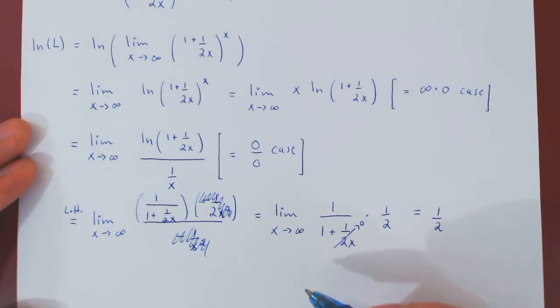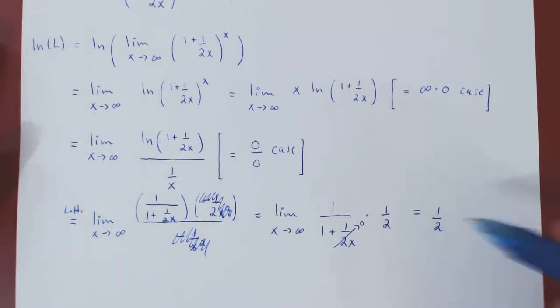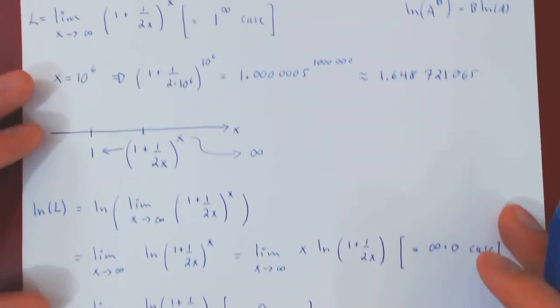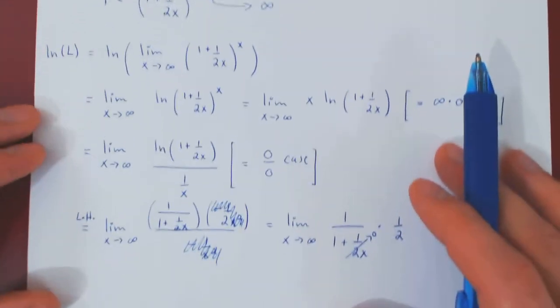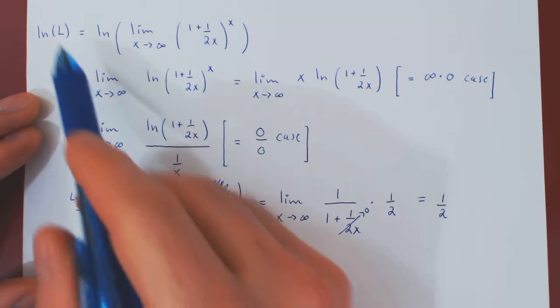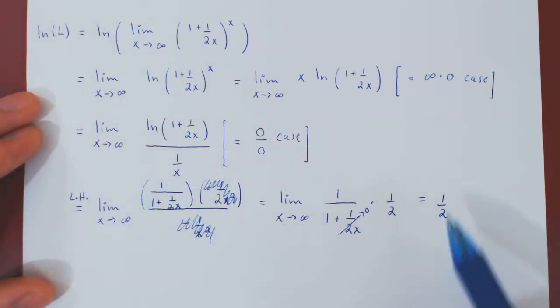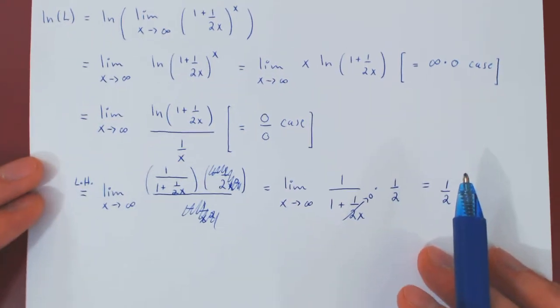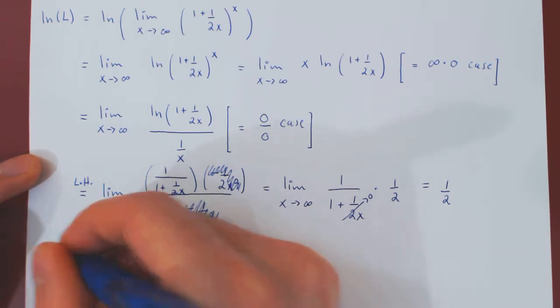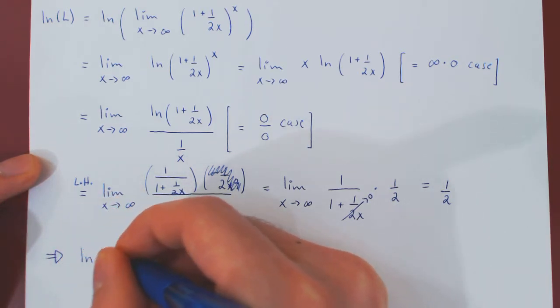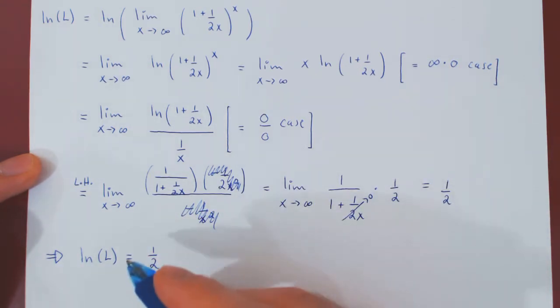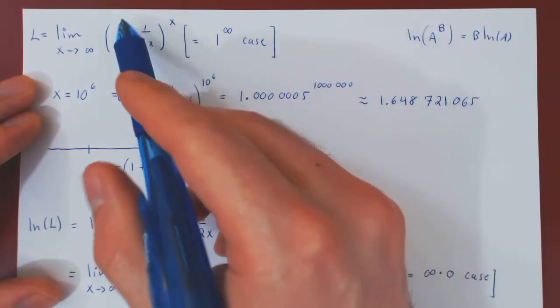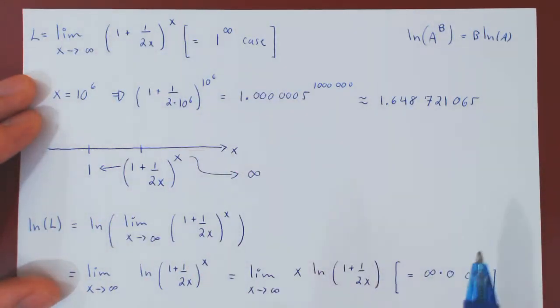We have to be careful here at this point because we were after finding this limit, which we called L, but now we haven't found L. We have found the ln of L to be 1 half. So let's be careful. So the ln of the limit is equal to 1 half. So ultimately we want the value of L, the value of not the ln of the limit, but the value of the original limit.